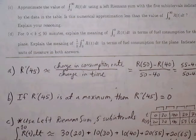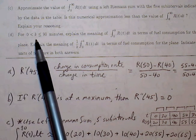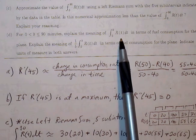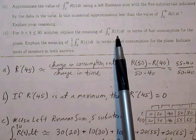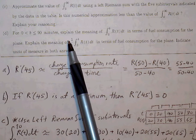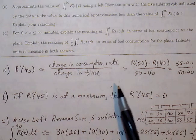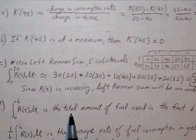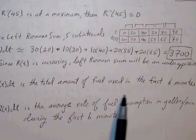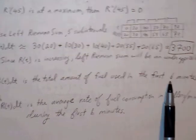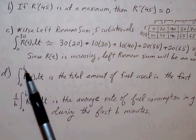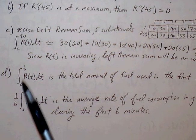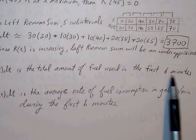For part D, between zero and B minutes, explain the meaning of the definite integral of R of T from zero to B in terms of fuel consumption for the plane. If R of T is the rate of consumption, then the accumulation of the rate of consumption gives the total amount of fuel used in the first B minutes — whatever that B value is, whether 40, 50, 90, or 150.